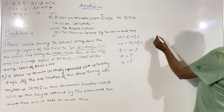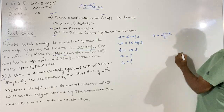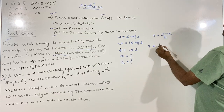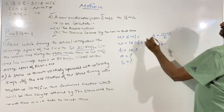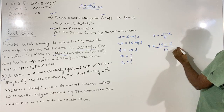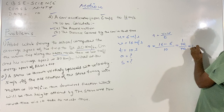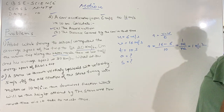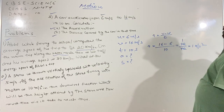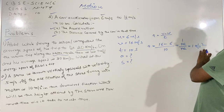By the first equation, a is equal to (v − u) over t. Substituting the values, a is equal to (16 − 6) over 10, that is 10 over 10, which equals 1 meter per second squared. So the acceleration of the car is 1 meter per second squared.